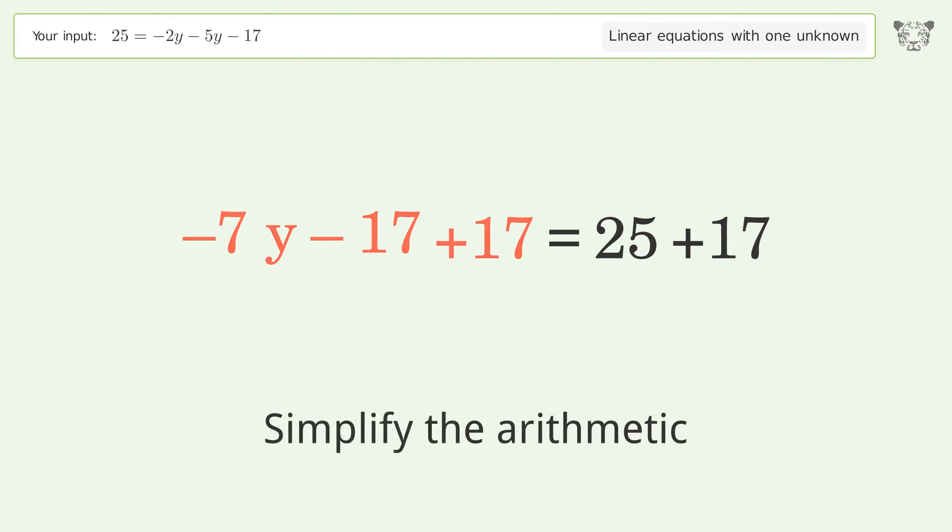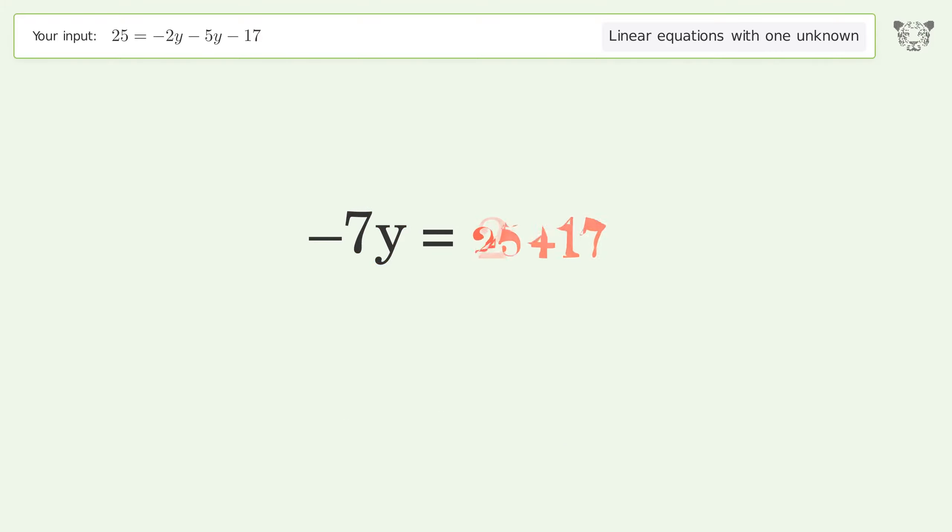Simplify the arithmetic. Isolate the y. Divide both sides by negative 7.